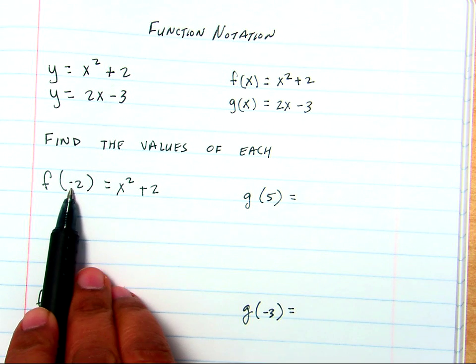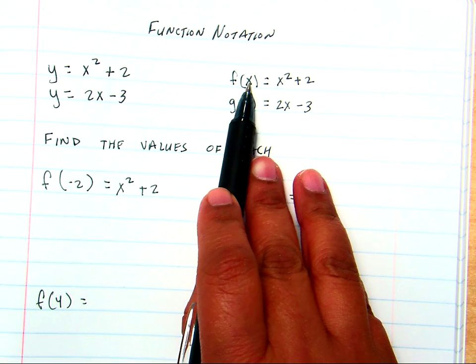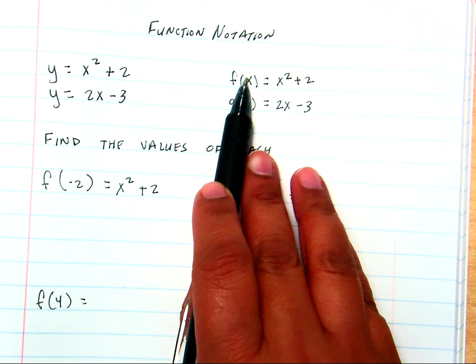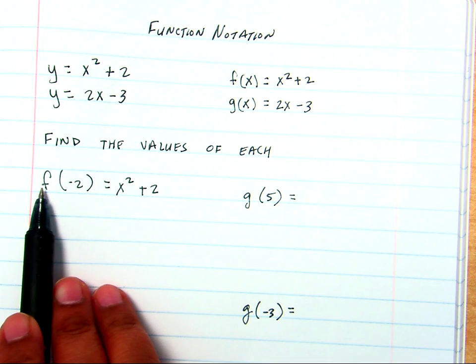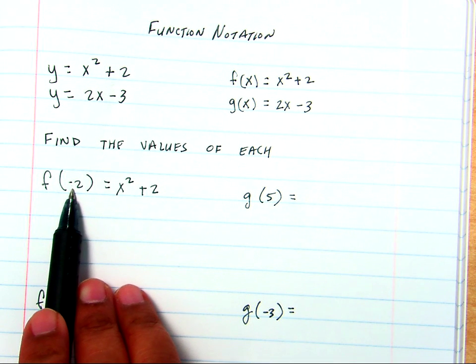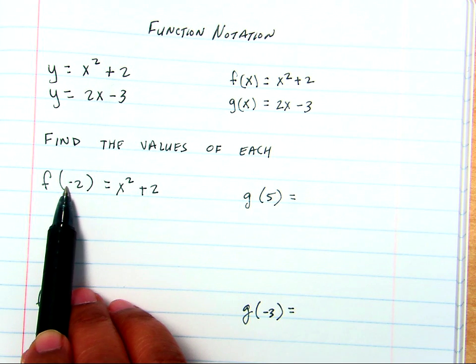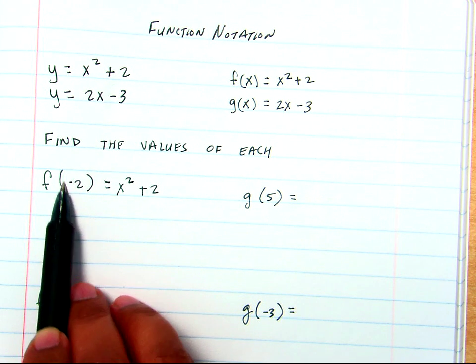Now, where is this negative 2 in place of? So, if you look inside here, when it was f of x, you had the x inside. Now, this is saying f of negative 2. So, instead of writing an x this time, wherever we see an x, we're going to write negative 2.